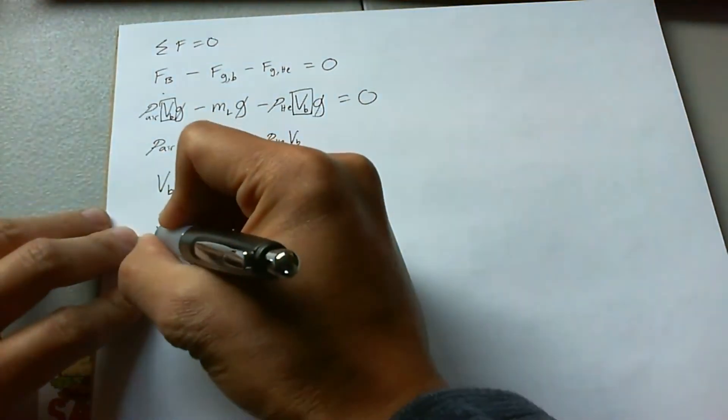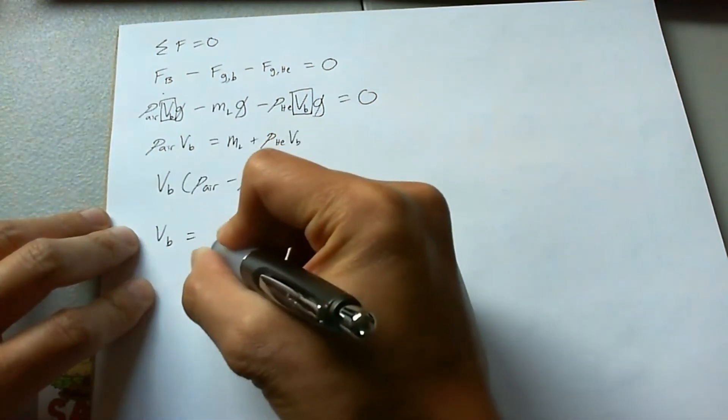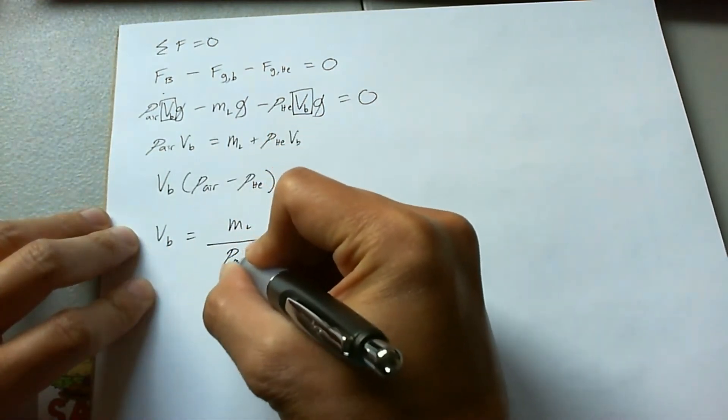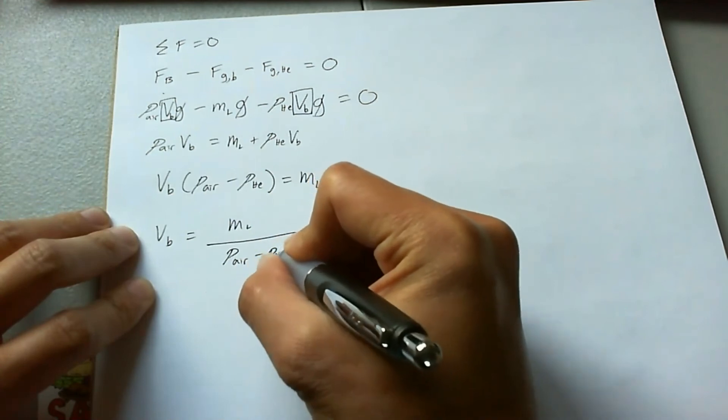So now solving for VB, we have the mass of the load divided by the difference in the densities of air and helium.